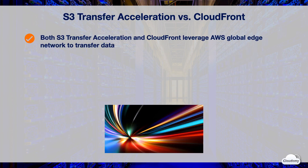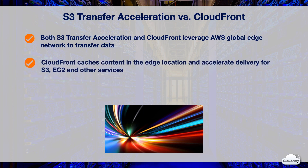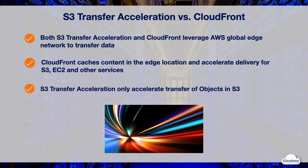Both S3 Transfer Acceleration and Amazon CloudFront use similar concepts to speed up data transfer — they both leverage the AWS Global Edge Network. However, there are some differences. S3 Transfer Acceleration is a feature of the S3 service, while Amazon CloudFront is a separate AWS service. CloudFront can not only accelerate content delivery but also cache content in edge locations and minimize delivery of the same content over long distances, supporting S3, EC2, API Gateway, and other AWS services. S3 Transfer Acceleration helps speed up data transfer over long distances, but it doesn't have caching capability.